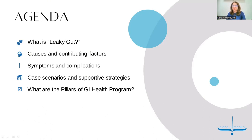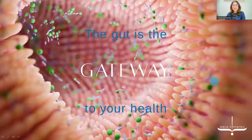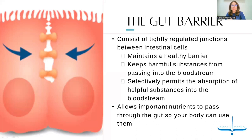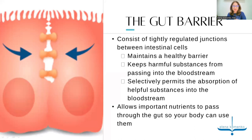This is a nice picture of our gut lining. The gut is the gateway to your health — it's that interface between the outside world and the inside of our body. A lot of interesting things happen at the gut lining level, at that gut barrier level. As you probably know, the gut barrier exists only because of tightly regulated junctions between intestinal cells. It's actually a single cell layer that separates us from the outside world, but it's tightly regulated.